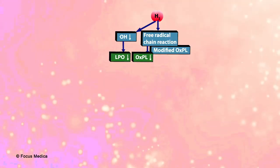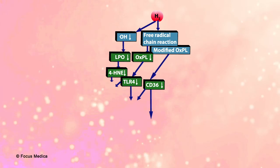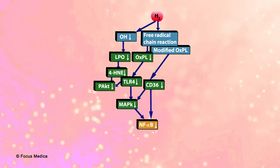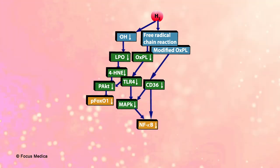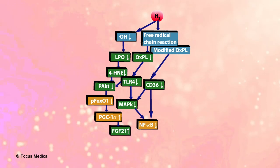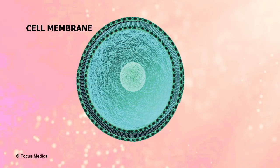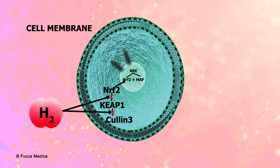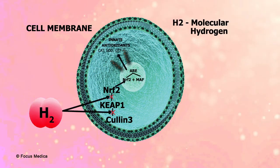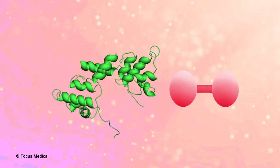The possible role of H2 in lipopolysaccharide (LPS) signaling, mitogen-activated protein kinase (MAPK), and nuclear factor kappa-light-chain-enhancer of activated B cells (NF-κB) pathways, as well as the nuclear factor erythroid 2-related factor 2 (Nrf2) paradox, have also been discussed.